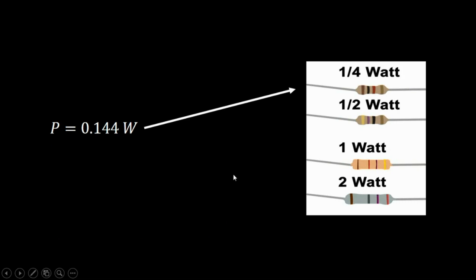Now we want to select a resistor according to its power rating. When selecting a resistor, we must choose one with a power rating higher than the calculated power. If you select a resistor whose power rating is less than the power in your circuit, the resistor will burn. For example, here we select a resistor with a power rating of 1.5 watts, which is higher than the 0.144 watts in our circuit.